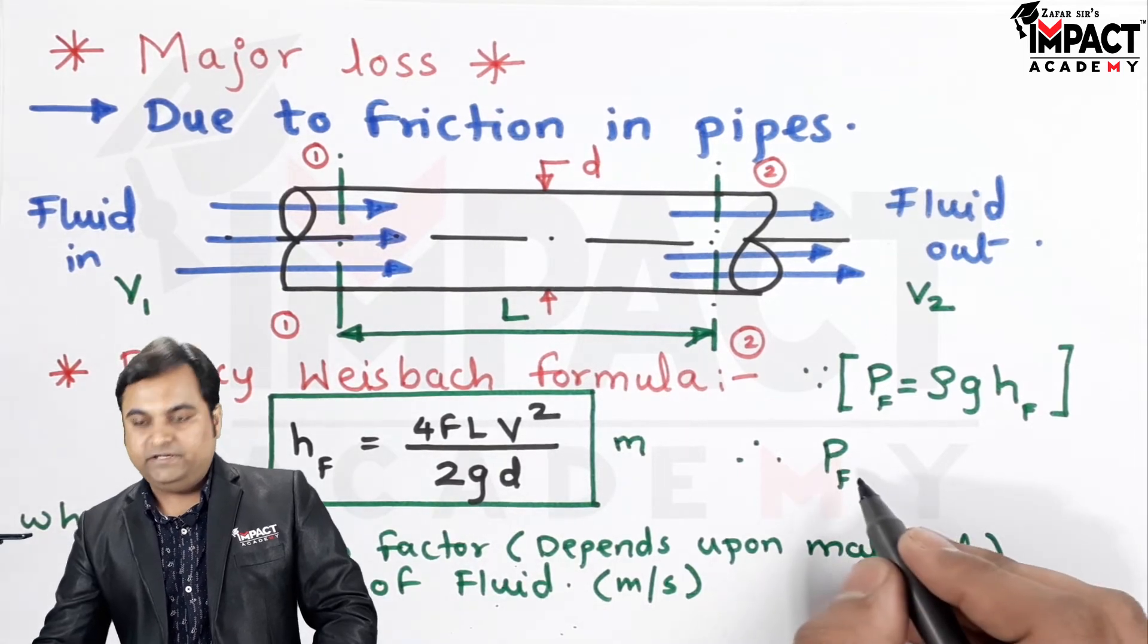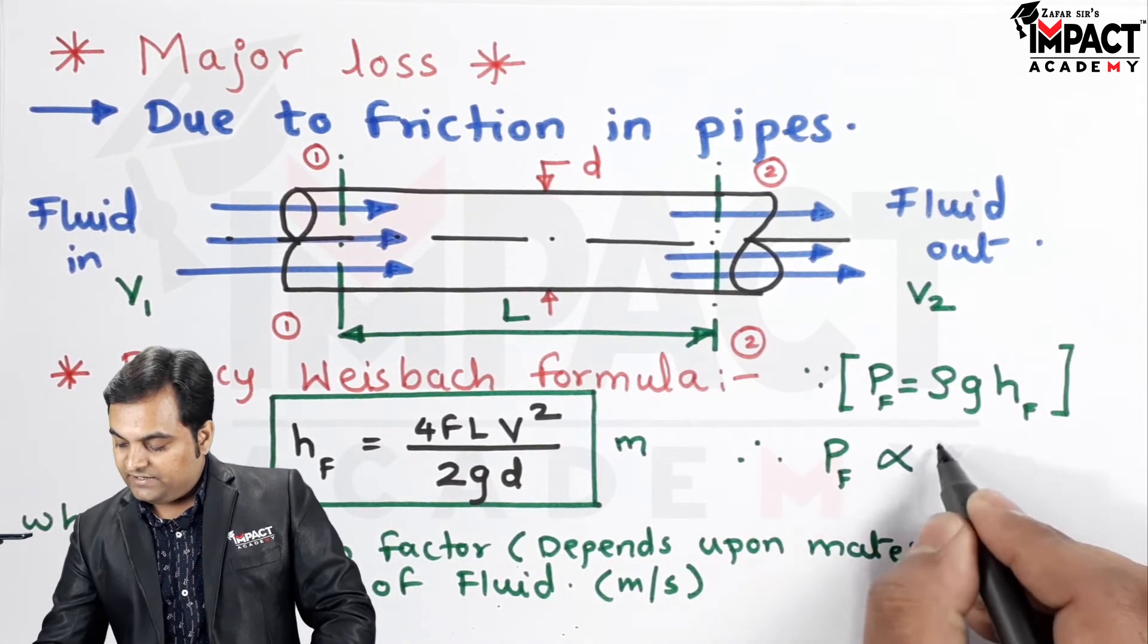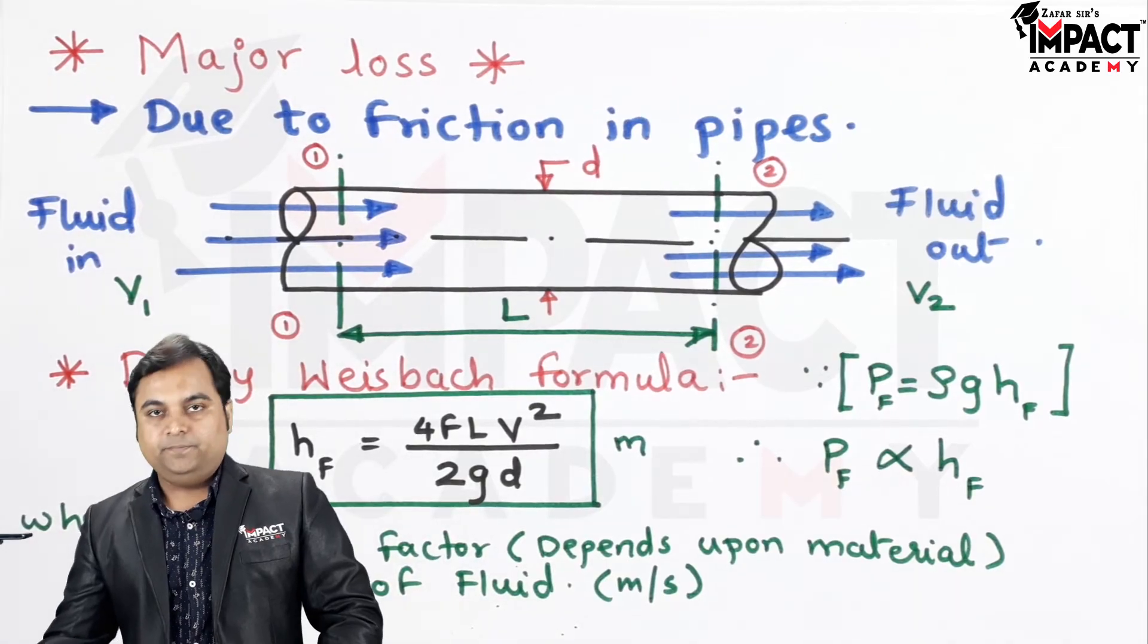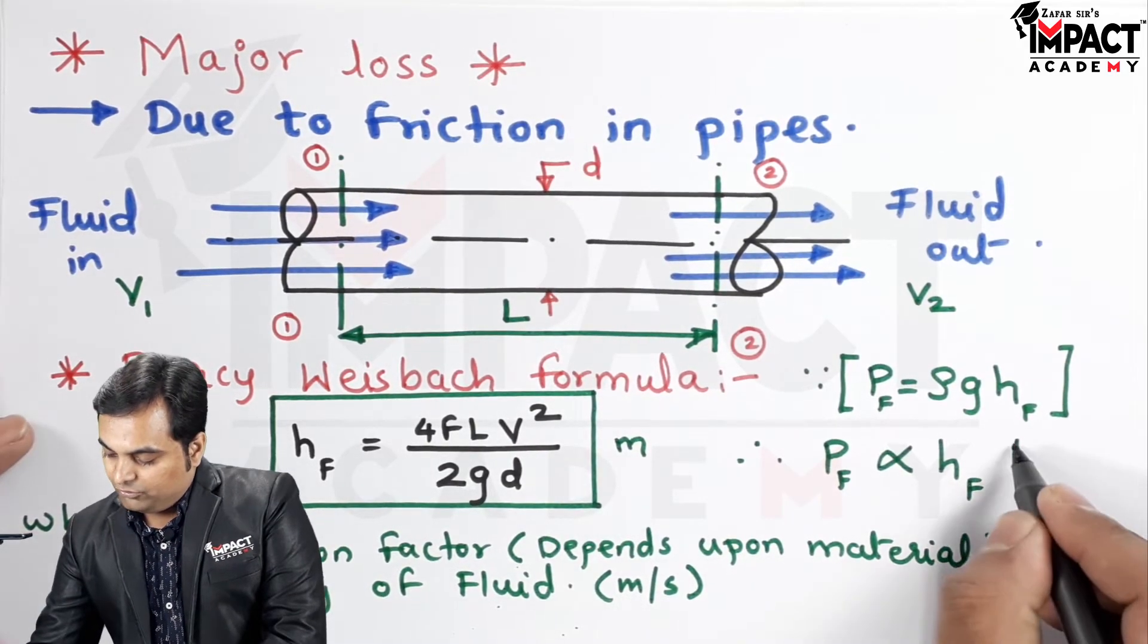And as we can see over here, the intensity of pressure is directly proportional to the head loss due to friction. It means more is the value of HF, more would be the intensity of pressure which is lost.